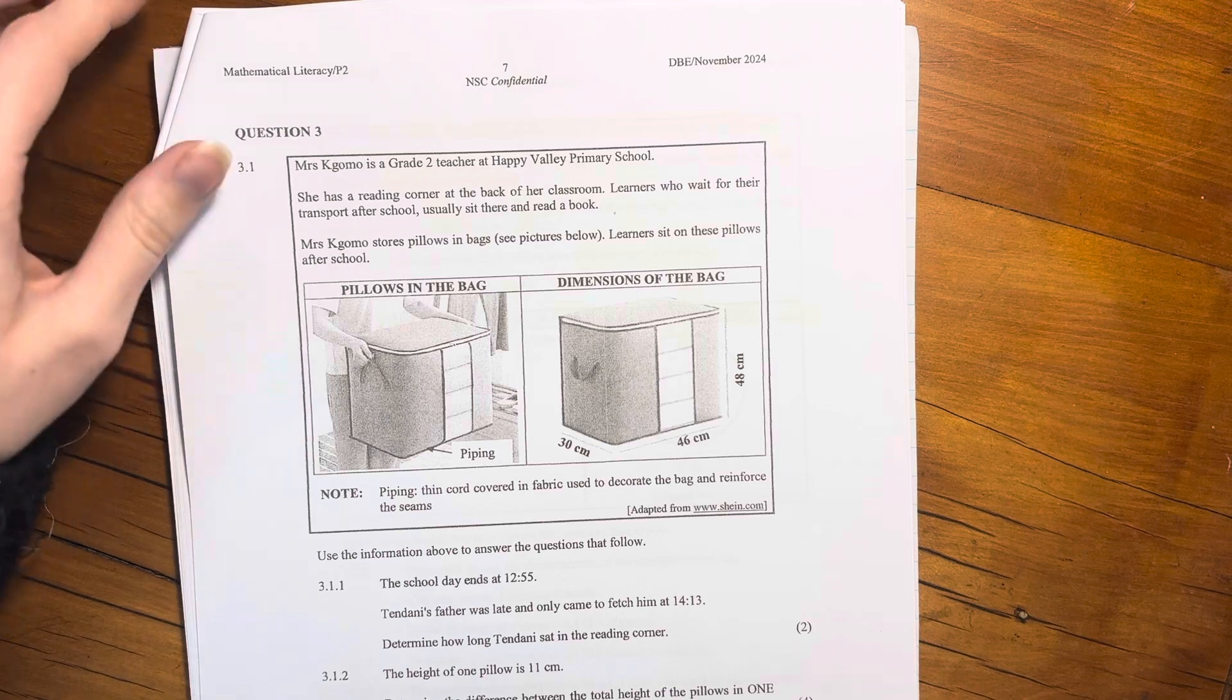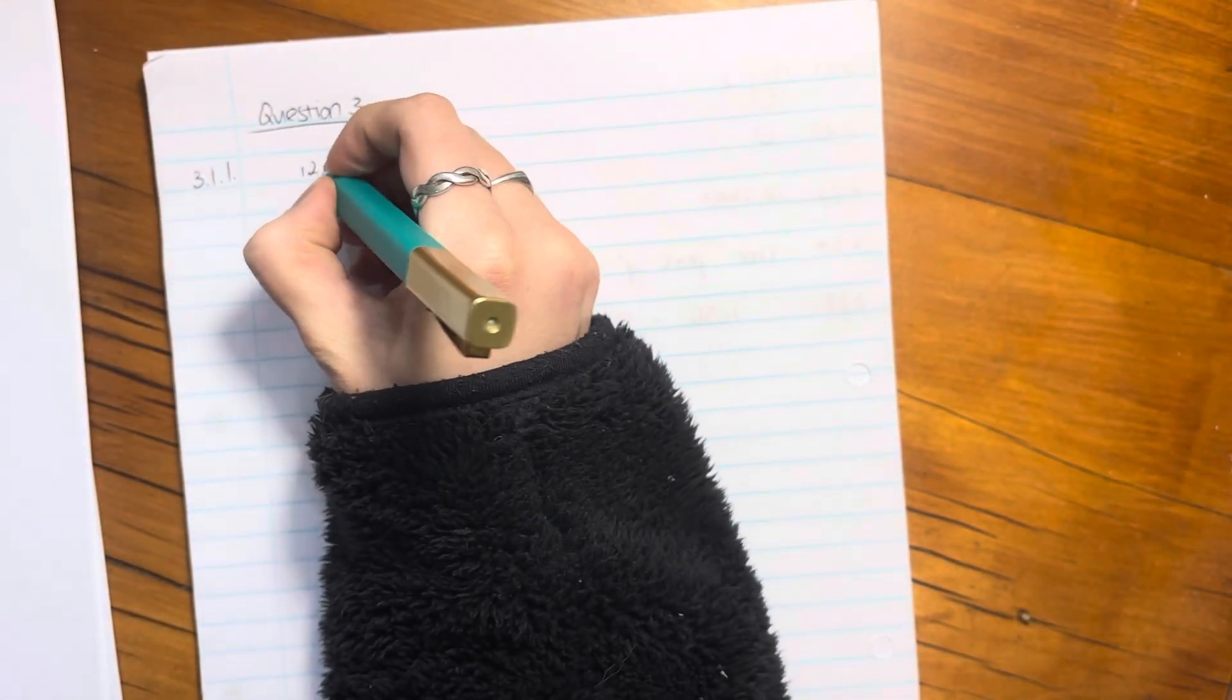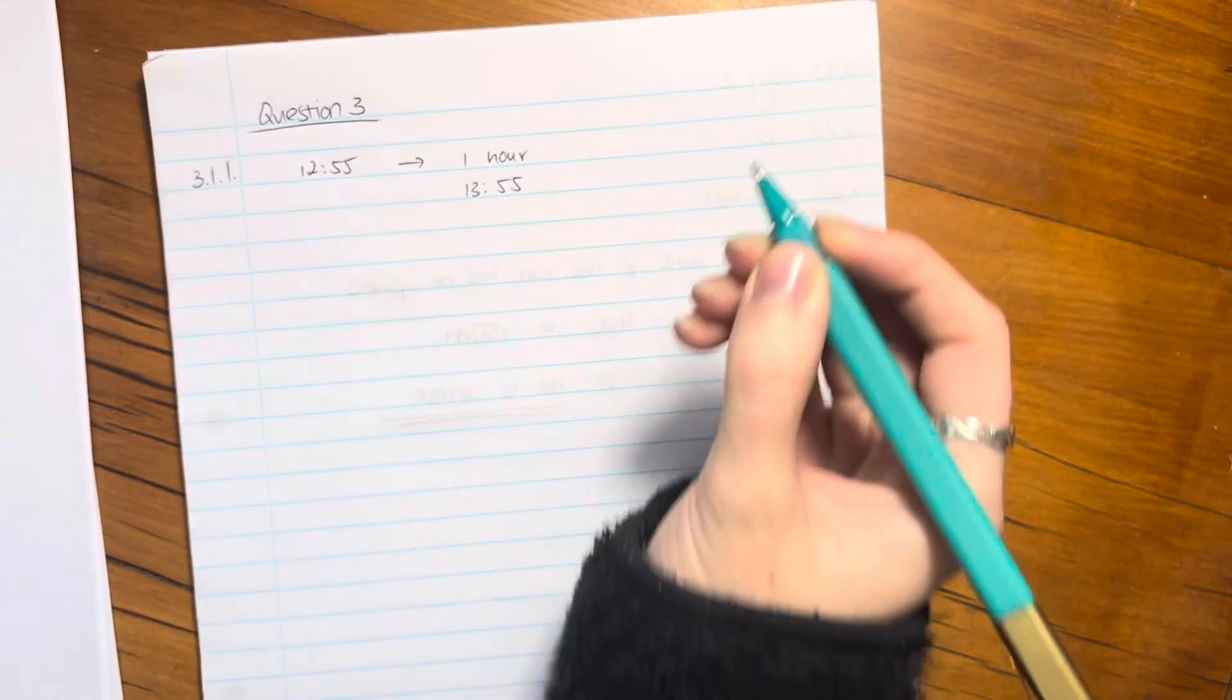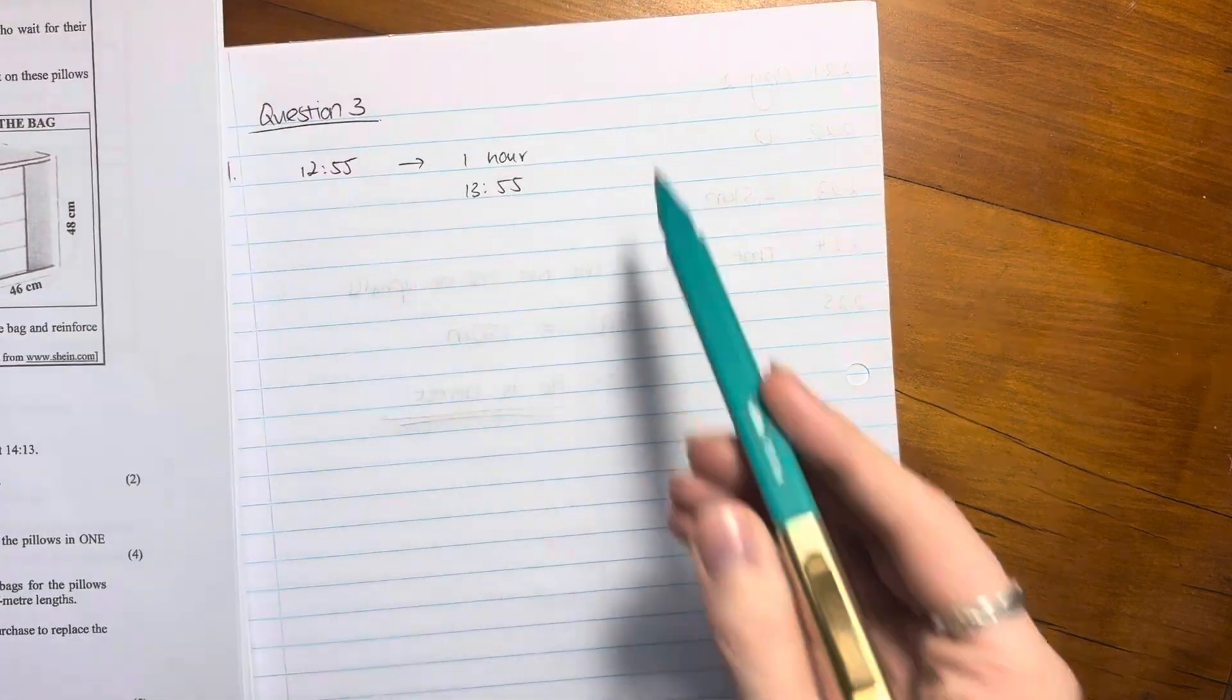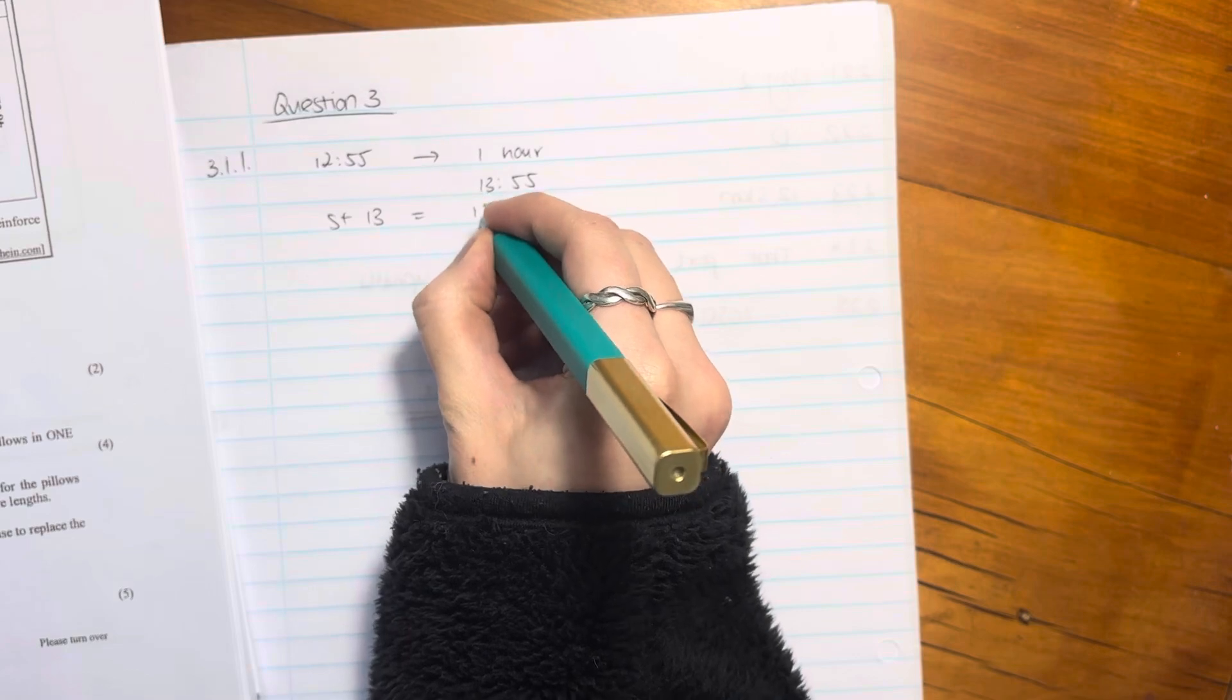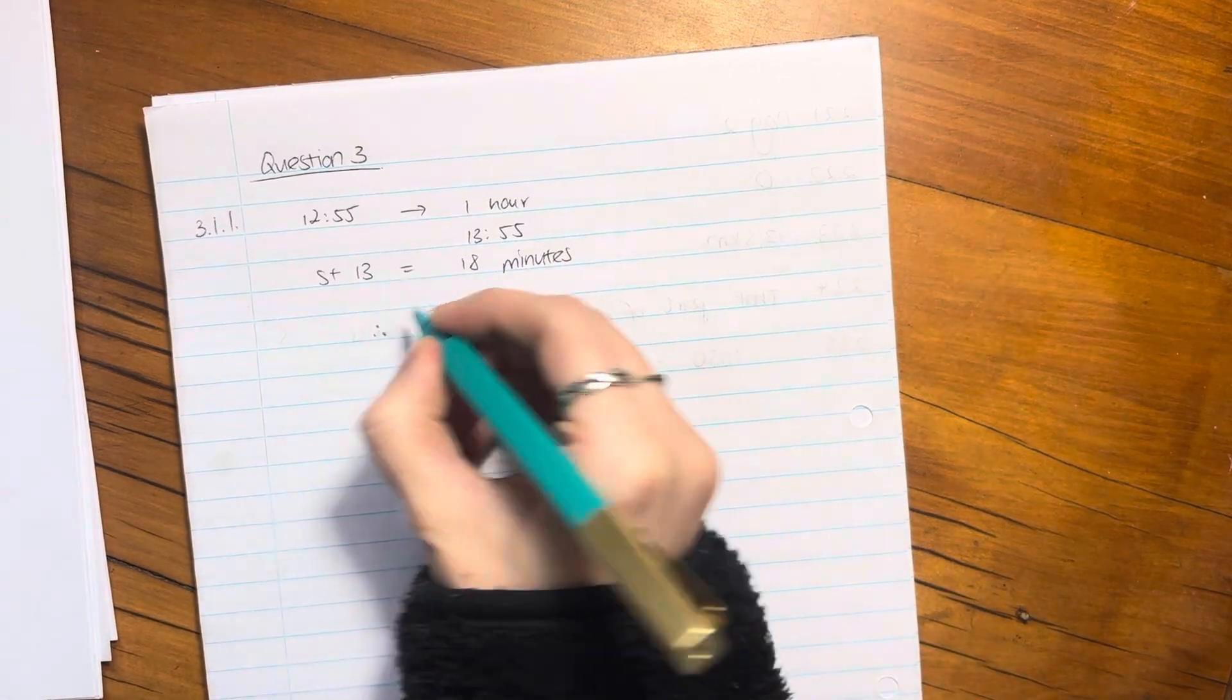So what we need to do is we go from 12:55. Let's do this systematically. So 12:55, he waited one hour until 13:55. That was really one hour, and then to get to 14:13, he waited another five minutes to get to 14, and then five plus 13 gives me 18 minutes. So you just have to work sort of quite systematically here. So in total, therefore,